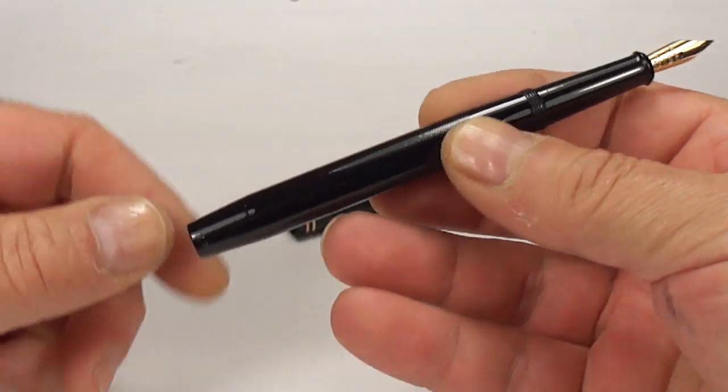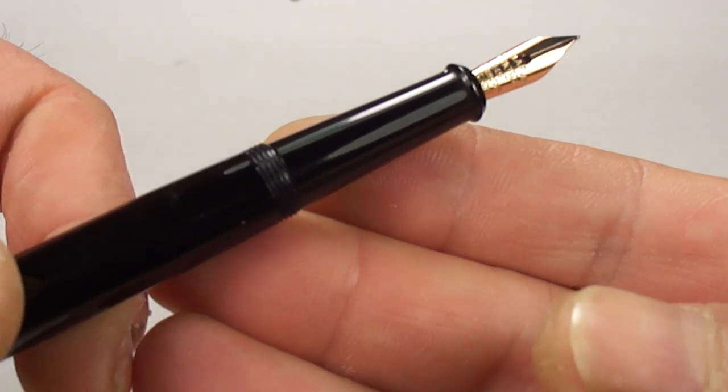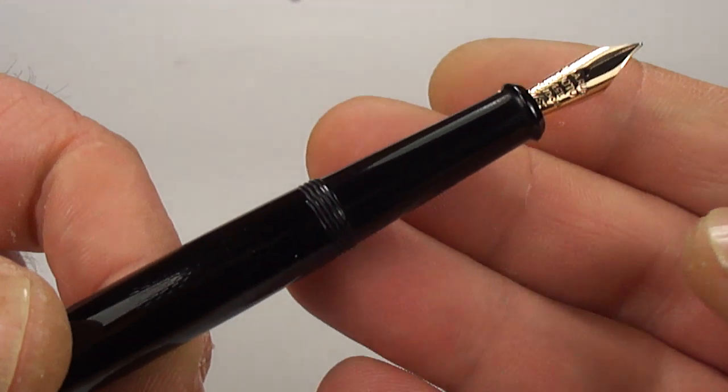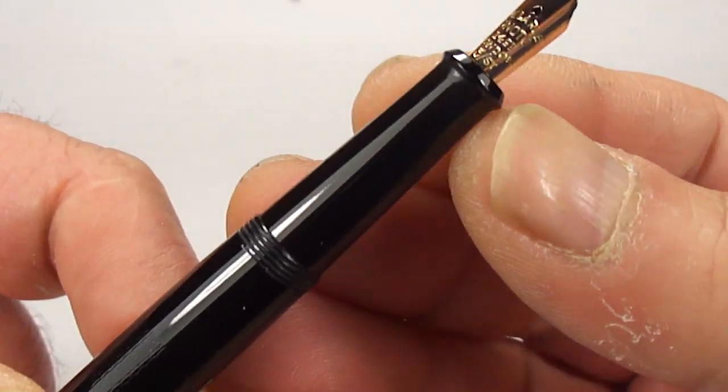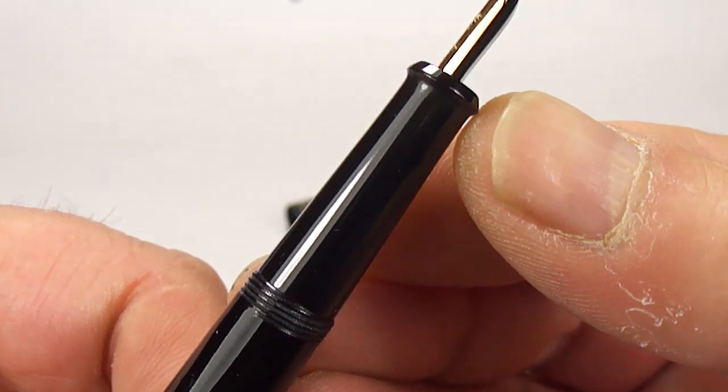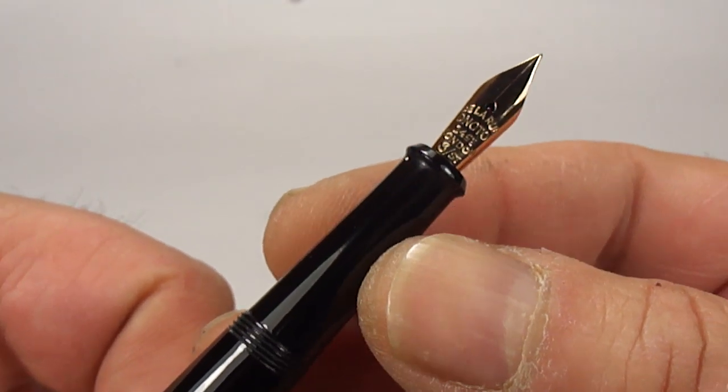Onotos are actually my favorite pens. If we show you to the top there, you can see it's got this elongated section to the top there, with a little area just to the top of the section there. And then we've got this lovely Onoto nib.